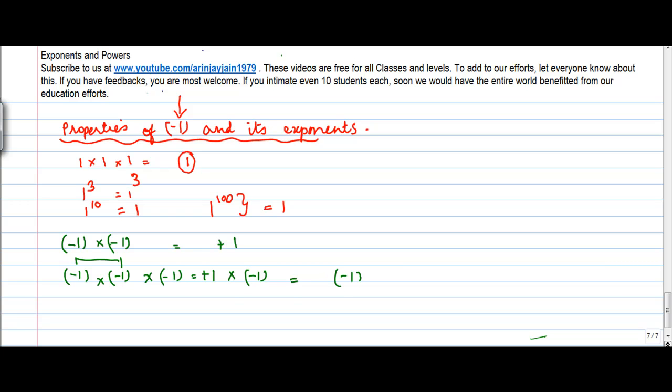So this is interesting. When you multiplied minus 1 by itself two times you got plus 1, whereas when you did it three times you got minus 1.